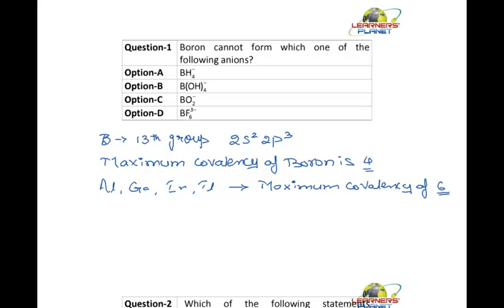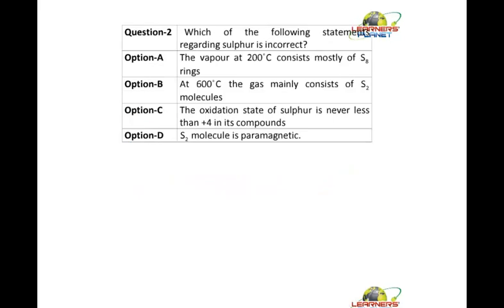In BH4 minus, the covalency is 4. This is 4 and this is also 4. But BF6, boron cannot show 6 covalency. So this ion cannot be formed by boron. While solving such questions, you need to know the maximum covalency shown by that particular element. Let's take up the next question.